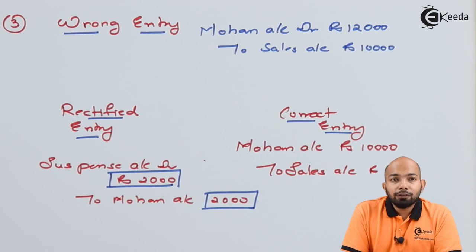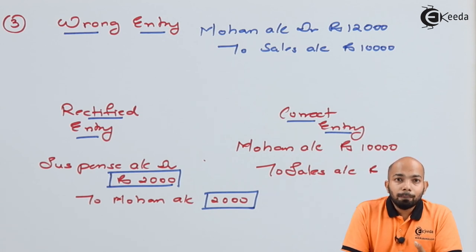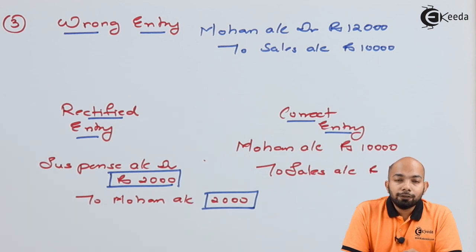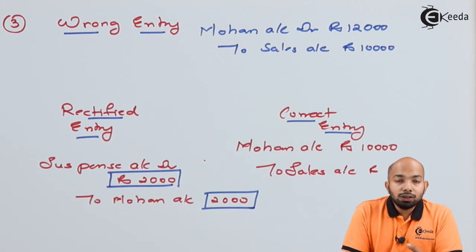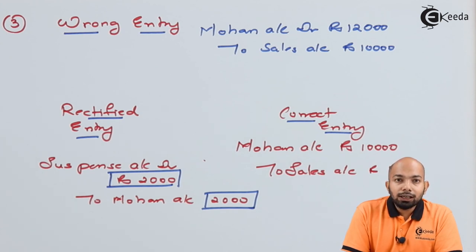Today we have learned about rectification of errors — passing entries when one single account is affected using a suspense account, and when both accounts are affected, how to pass the rectification entries. Thank you for watching this video. Keep subscribing to Ekeda and stay tuned.